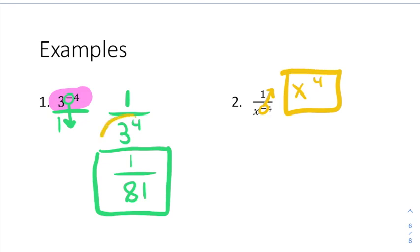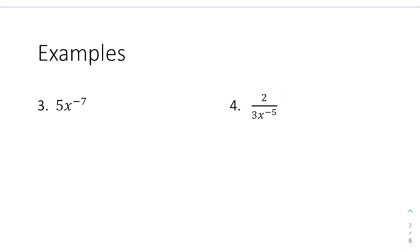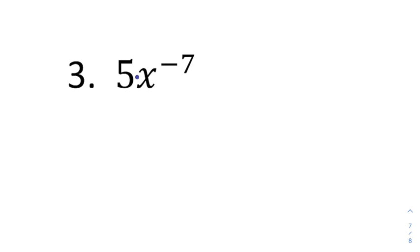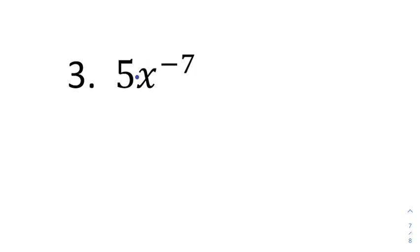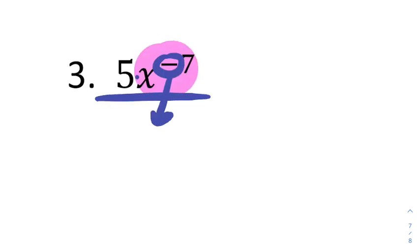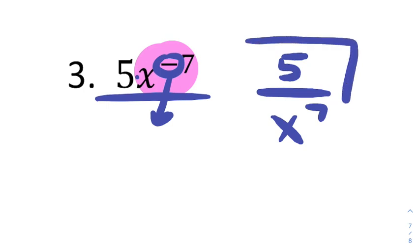You might wonder why we couldn't leave 3 to the 4th unsimplified earlier — that's because 3 is a constant. X is a variable, so we can't simplify further, and the problem is done. Now, example 3: 5 times x to the negative 7. The 5 and x are separated by multiplication, so the negative 7 only affects the x, not the 5. The 5 stays on top, and x to the 7th moves to the bottom, giving us 5 over x to the 7th.